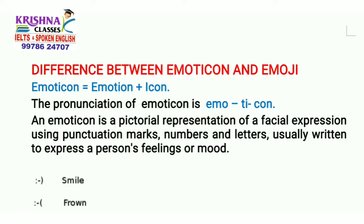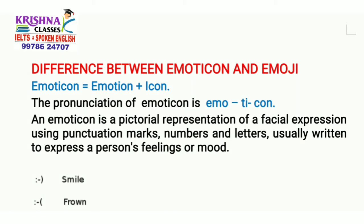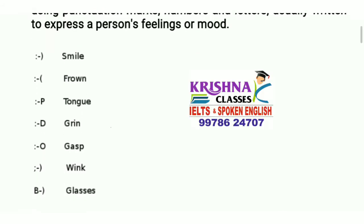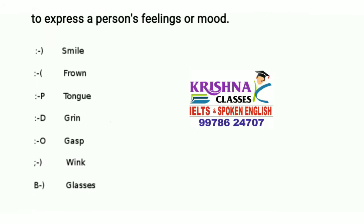The first is emoticons. It is emotion plus icon. The pronunciation of emoticon is emo-ti-con. An emoticon is a pictorial representation of a facial expression using punctuation marks, numbers and letters, usually written to express a person's feeling or mood. Basically when we don't have time to type a text, we send emoticons. These are some examples of emoticons.